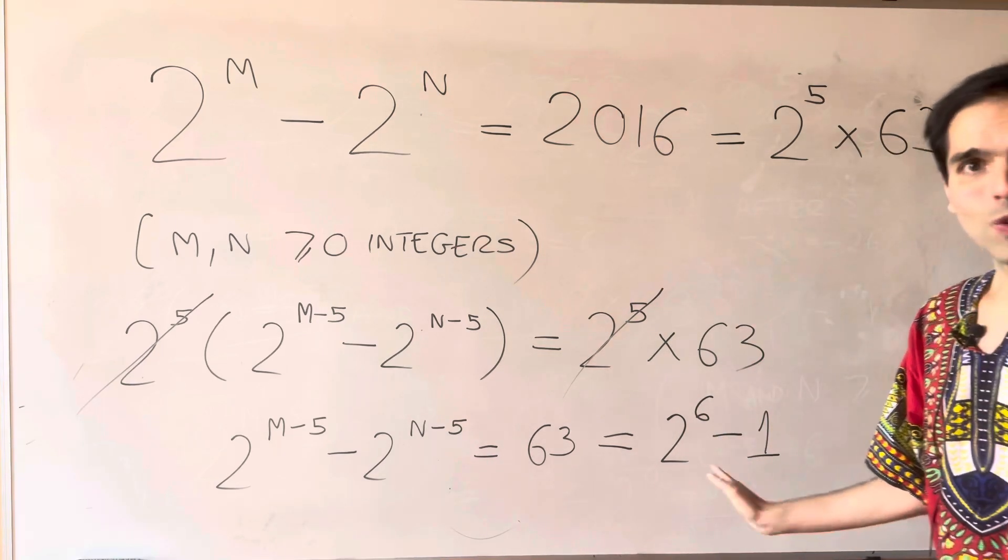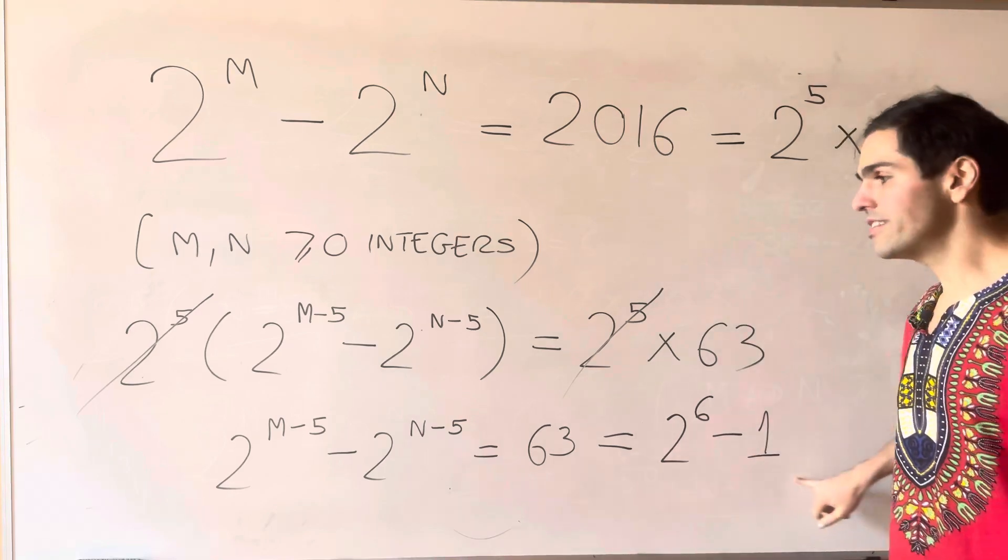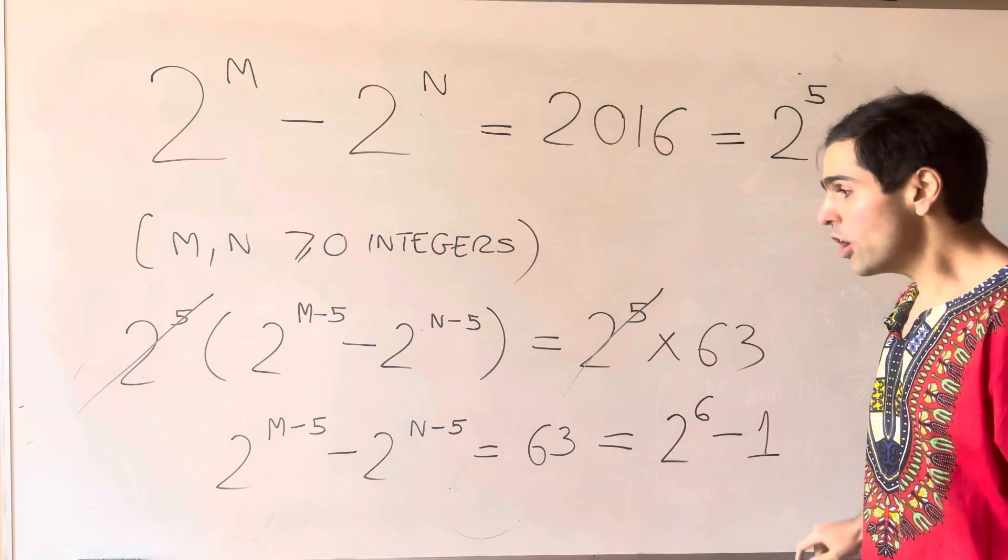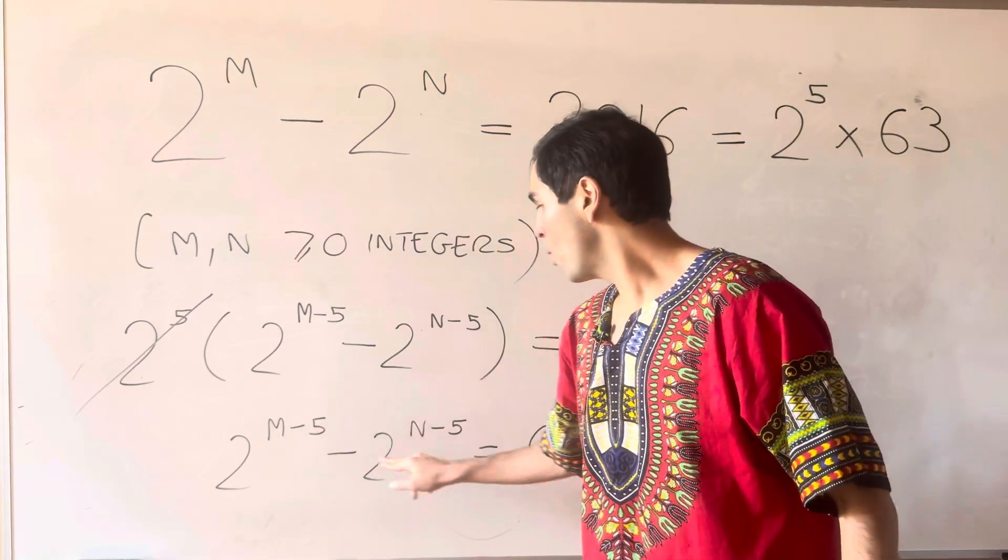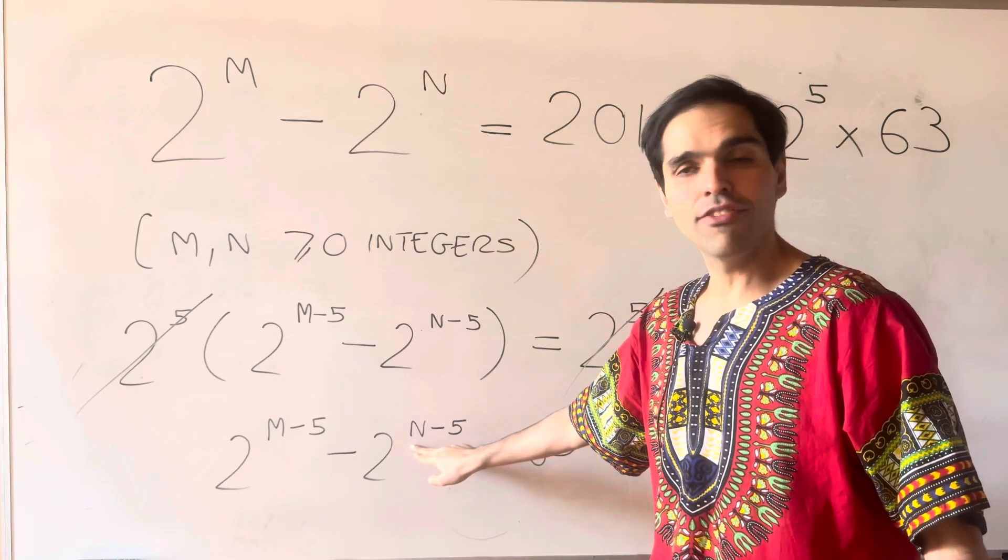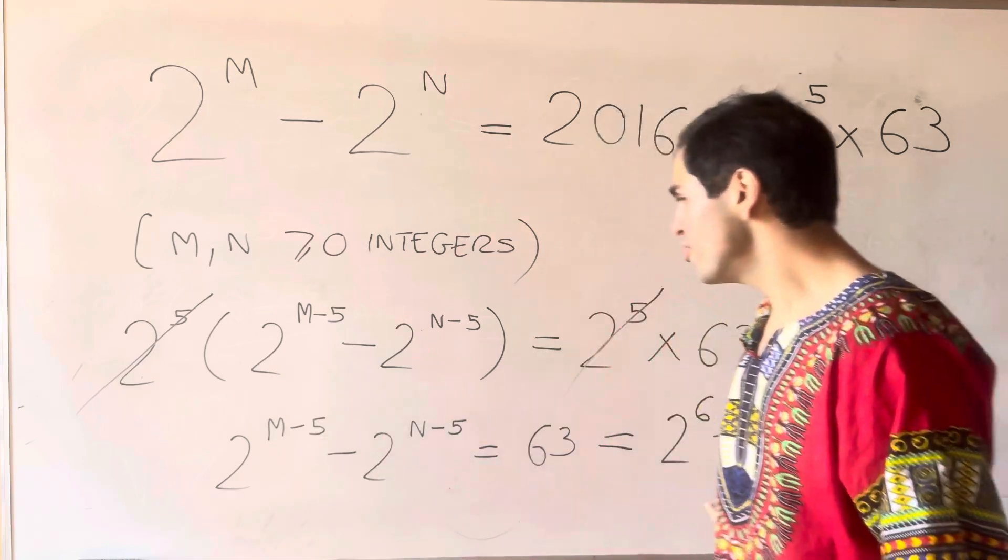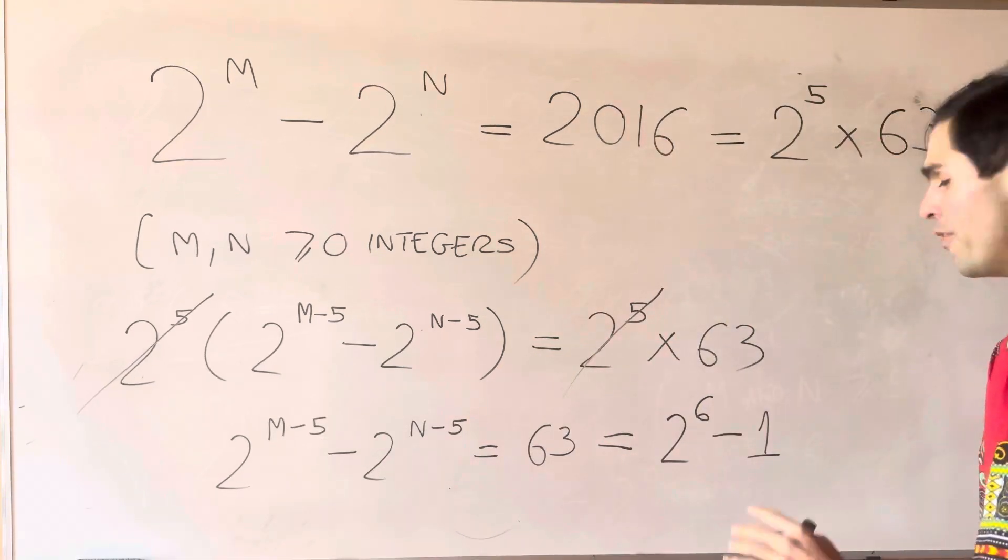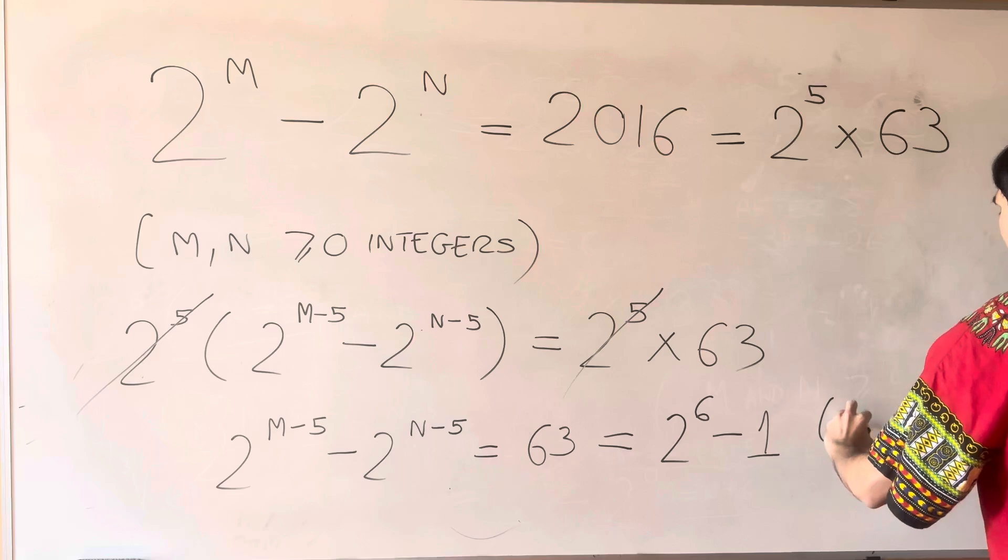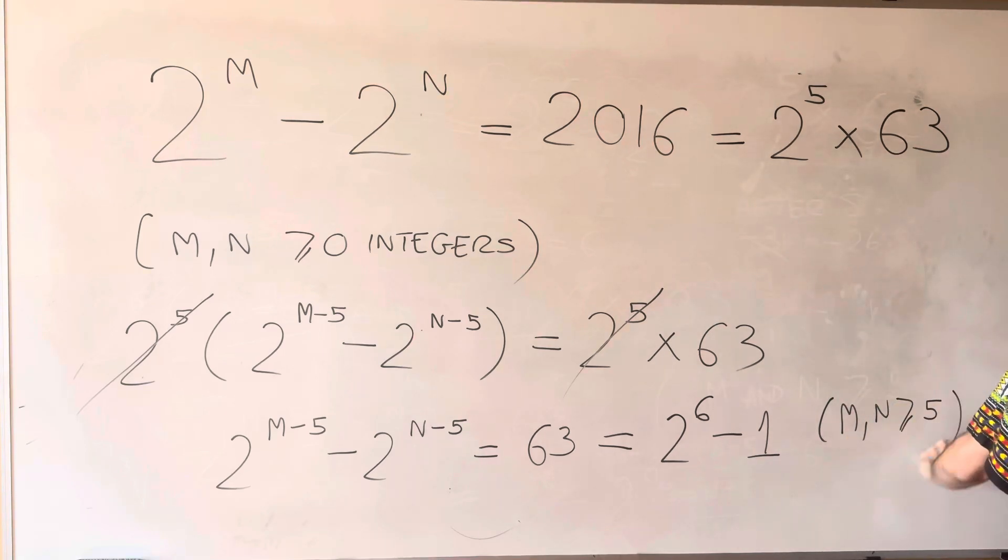Now here's a cool thing. First of all, this is an integer. So if m or n are less than 5, we kind of get a decimal number, so it wouldn't be an integer. So already we know that m and n are greater or equal to 5.